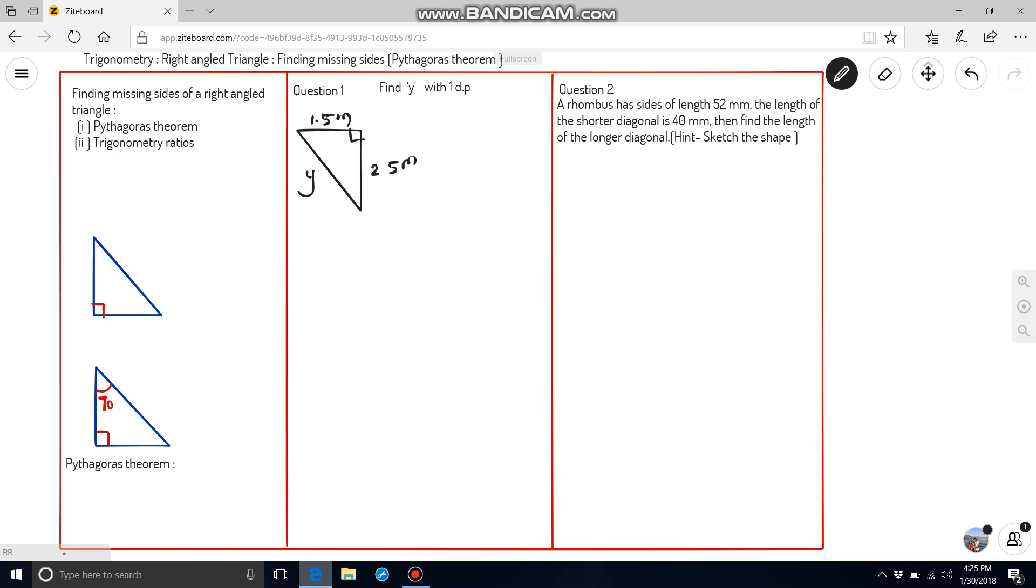Before that, we should be able to find out what is adjacent, opposite and hypotenuse. Here in the right angle triangle, opposite to 90 degree will be hypotenuse, that is the slanting line. The horizontal line, the sleeping line, is generally known as adjacent and the standing line we can consider as opposite.